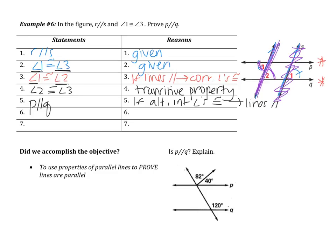I know this one was confusing, so let me summarize. I used the information about R and S being parallel to show corresponding angles with angles 1 and 2. Then, by the transitive property, I knew 2 and 3 were congruent. Because these are alternate interior angles, that showed the lines were parallel. If you still can't figure it out, put a star or question mark next to this problem so we know to go over it in class.